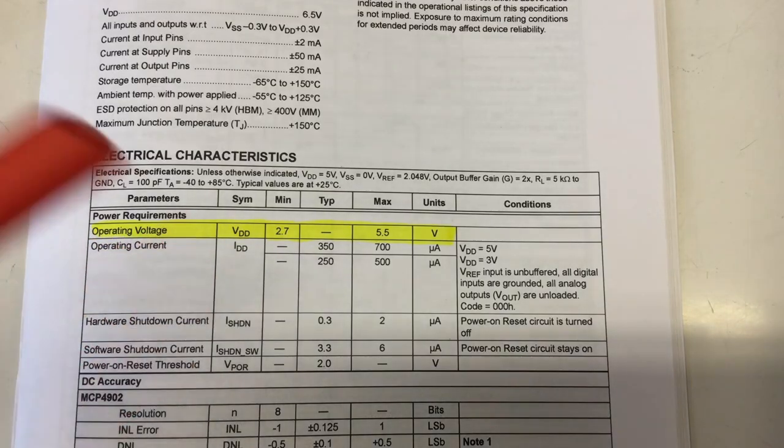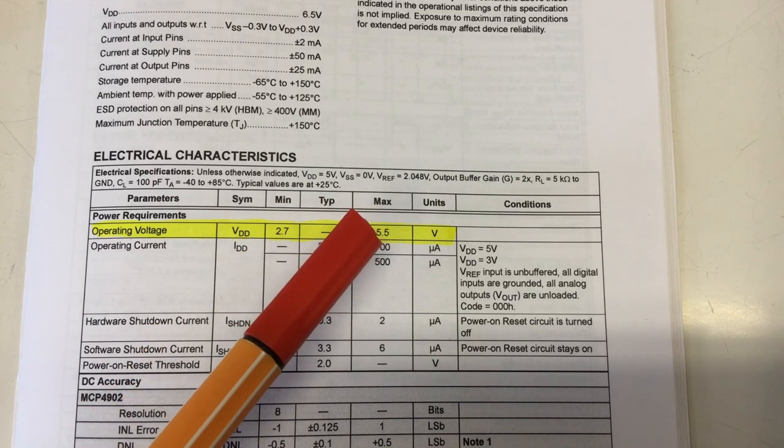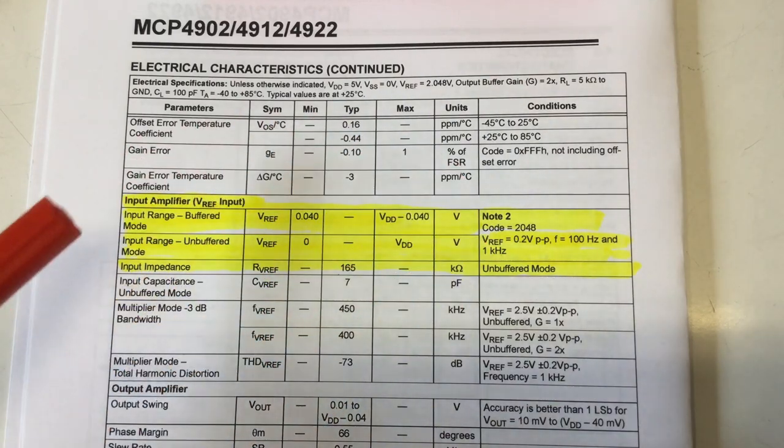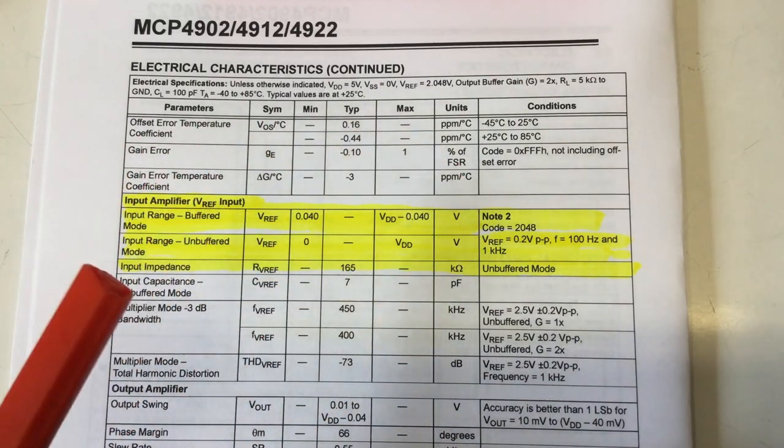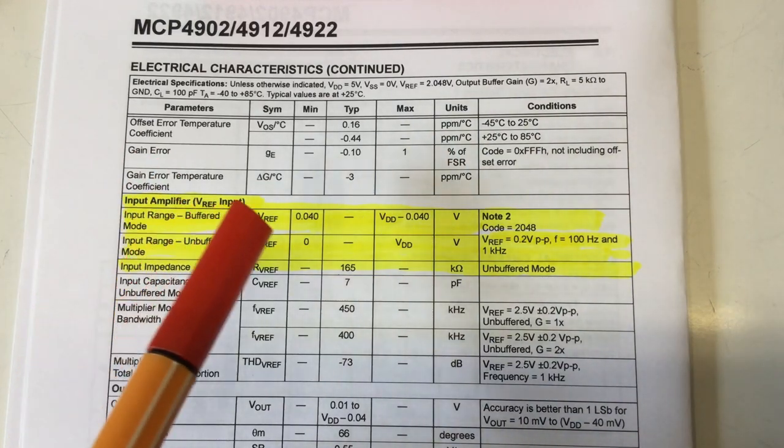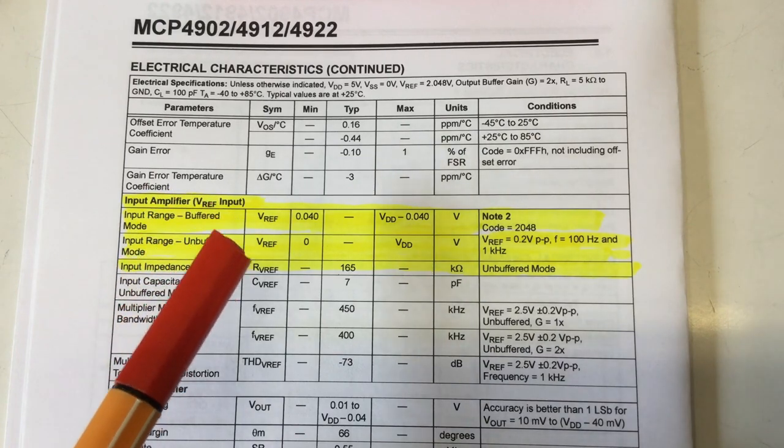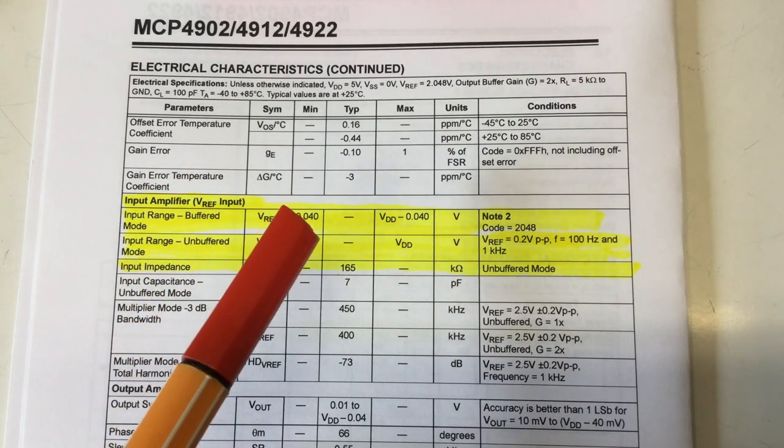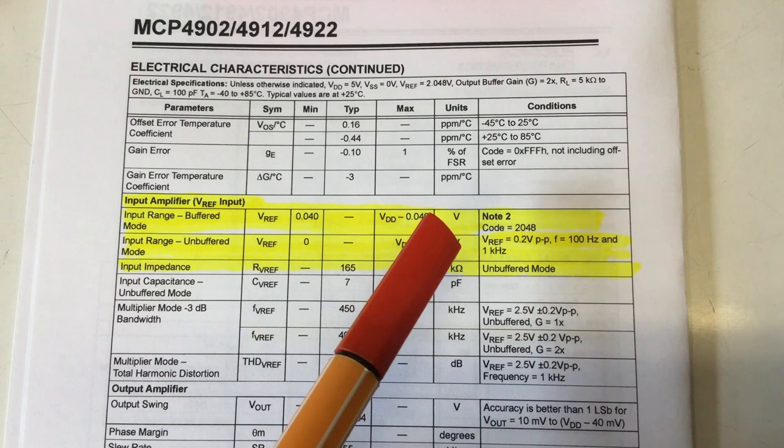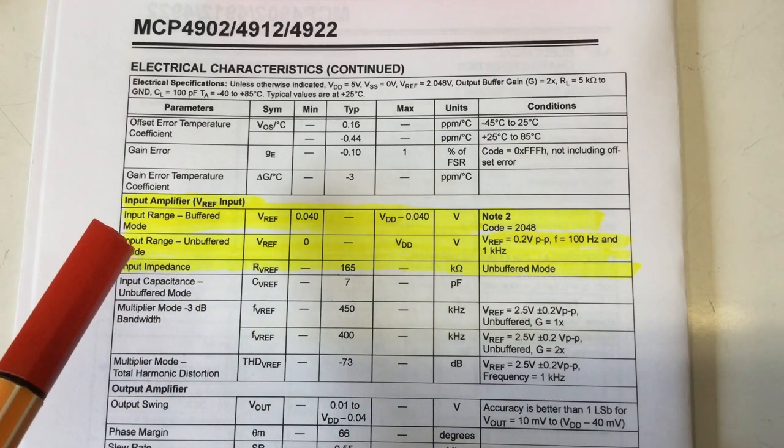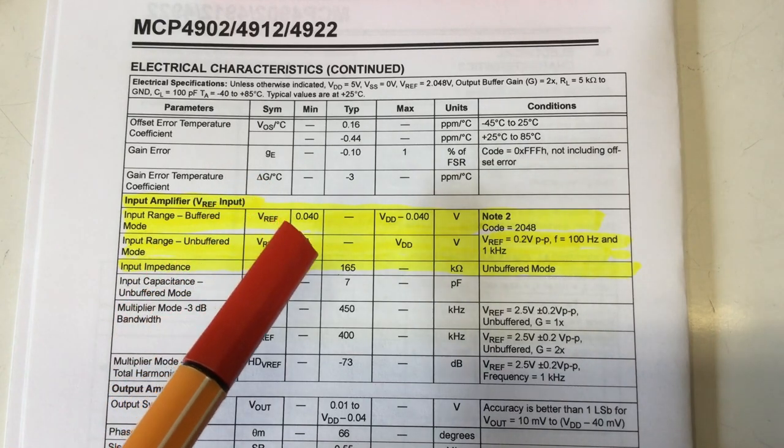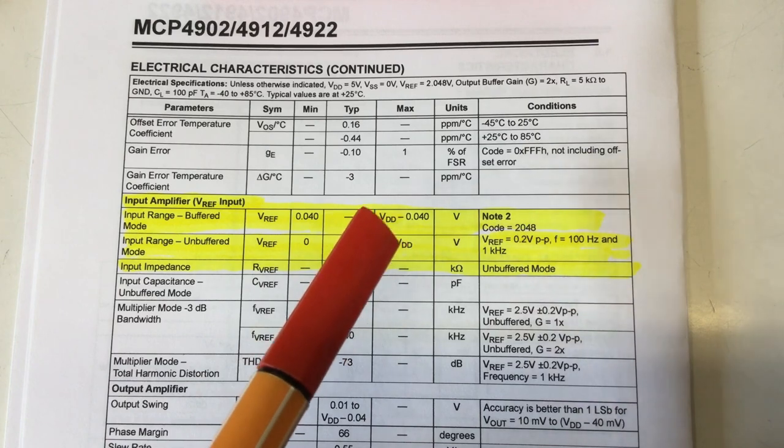Operating voltage is exactly the same: 2.7 to 5.5 volts. The datasheet for the 4922 contains an extra section here for the input amplifiers for your VREF inputs. And in buffered mode, using those input buffers, your supplied reference voltage can be in the range between 0.04 volts and VDD minus 0.04 volts. If you bypass the input buffers, your reference voltages can range between 0 volts, which makes no sense, to full VDD.